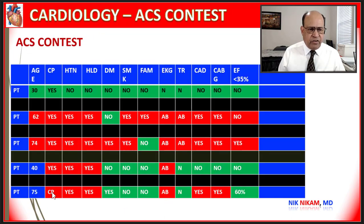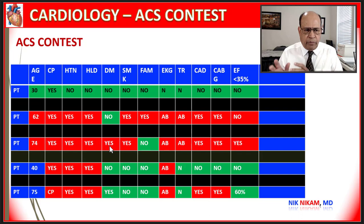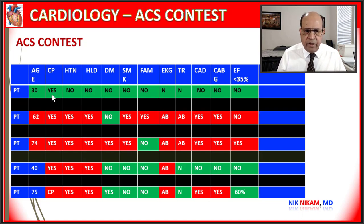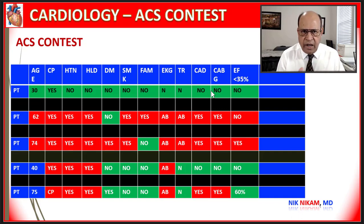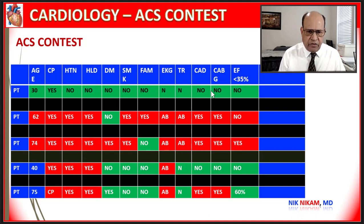Let's look at some scenarios and categorize patients into low risk, intermediate risk, or high risk. Here we have a 30-year-old patient presenting with chest pain, no risk factors such as hypertension, hyperlipidemia, diabetes, smoking, or family history, with a normal EKG, normal troponin, and no history of cardiac events. This is obviously a low risk patient, so the management will be quite different from somebody with a high risk presentation.